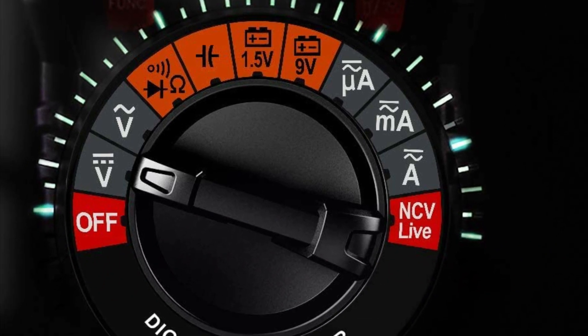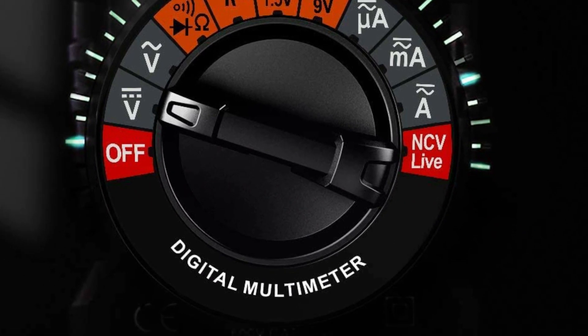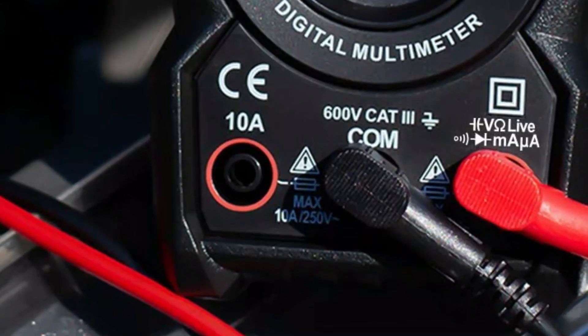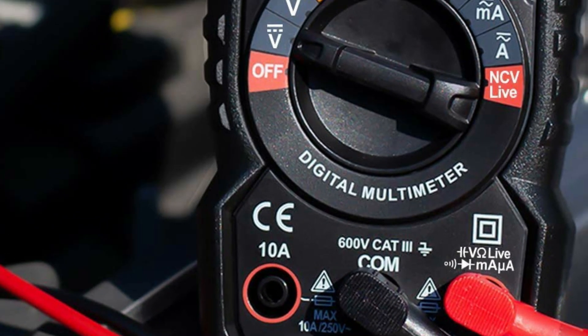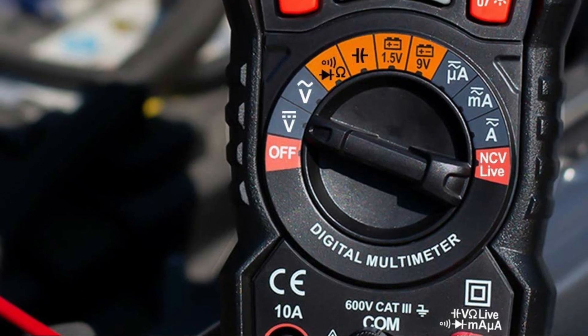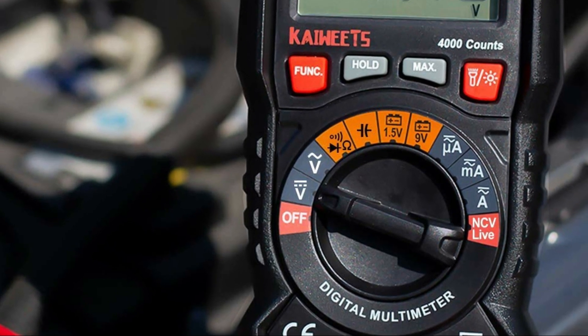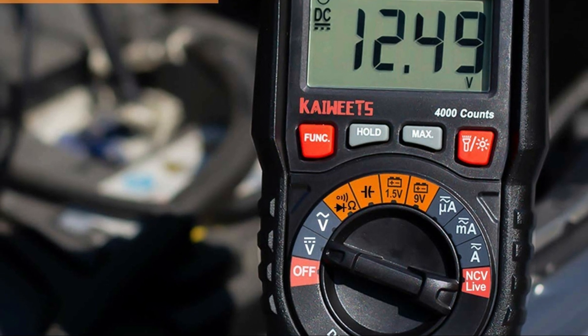It has an NCV inductive probe to detect AC voltage. Just put the probe's tip close to the outlet, terminal strip, or power cord. If the tip turns red and when the probe sounds when it's activated, you'll know that voltage is present.